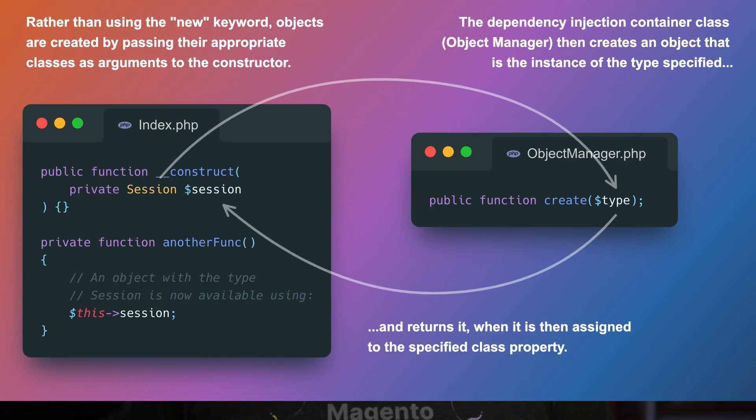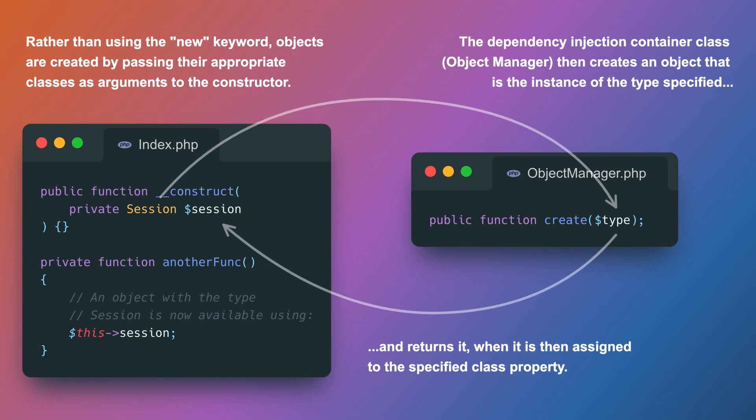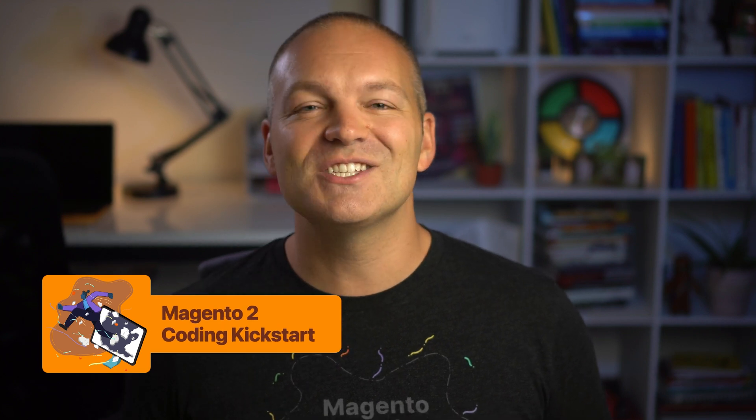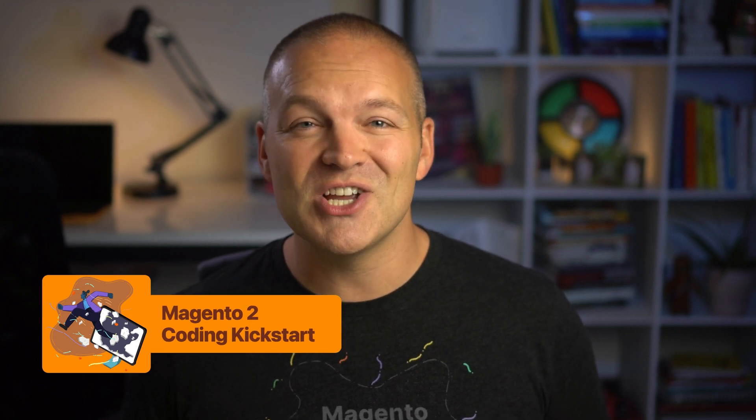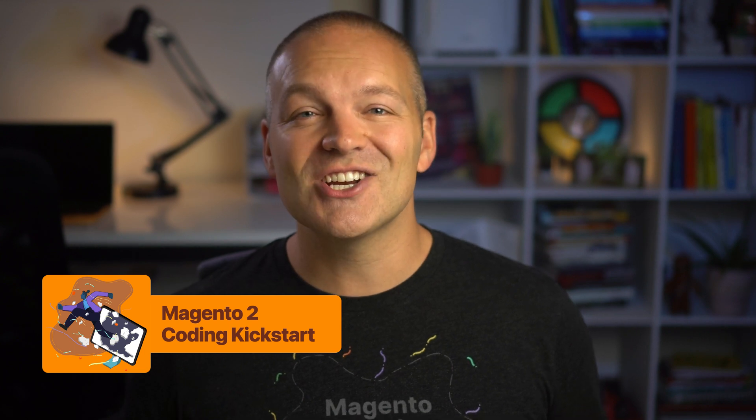Object Manager is a dependency injection container that is responsible for initializing all of the objects and managing dependencies in Magento. If you don't really know what Object Manager is or what it does, be sure to check out my Magento 2 Coding Kickstart course, which has over 80 lessons going over all of the fundamentals of Magento, including dependency injection, object instantiation, and much more.